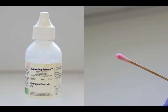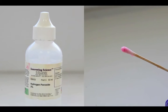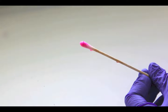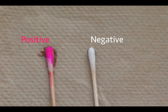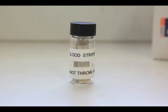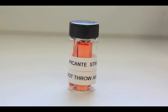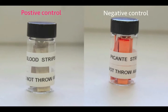Shown here is a positive test result — in a positive test result, the swab will turn pink. Shown here are positive and negative test results. The blood strip that we tested was a positive control. Since it contained hemoglobin, we expected it to turn pink when hydrogen peroxide was added. If we test another sample that does not contain hemoglobin, the swab should not turn pink. You must test positive and negative control samples before testing any unknown samples to ensure that your reagents are working properly and that you are following the test procedure correctly.